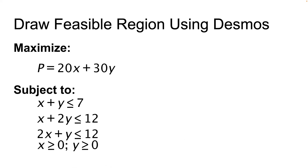This is the first example we'll work in this video. We want to maximize the objective function p equals 20x plus 30y, subject to the following constraints: x plus y is less than or equal to 7; x plus 2y is less than or equal to 12; 2x plus y is less than or equal to 12; x is greater than or equal to 0; and y is greater than or equal to 0.